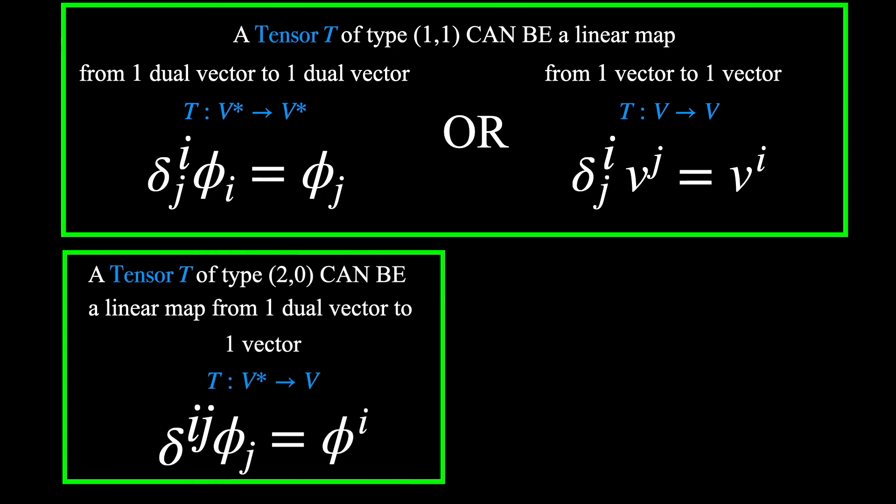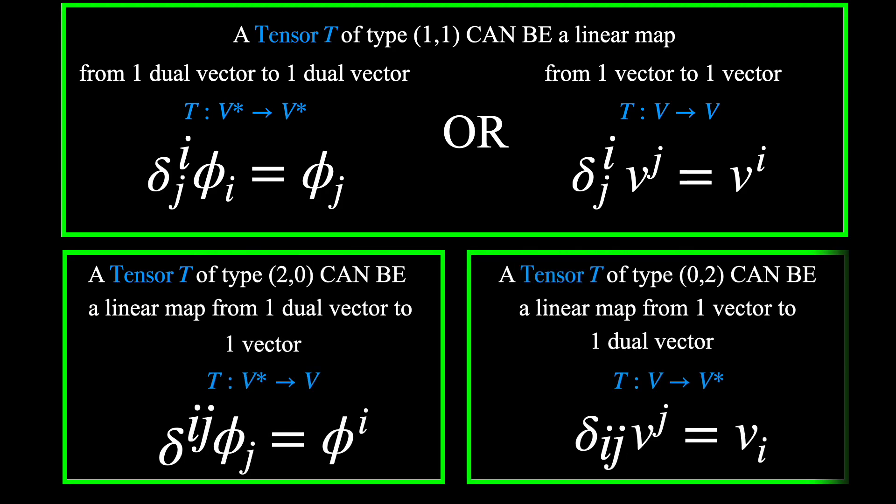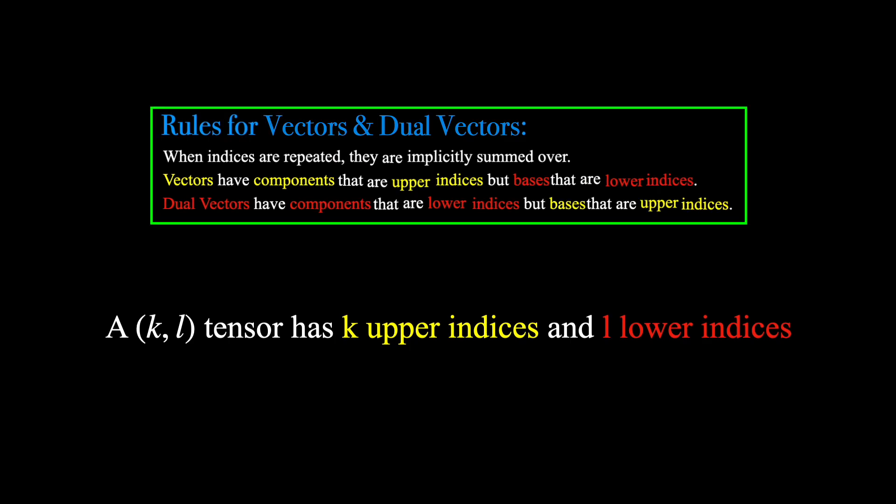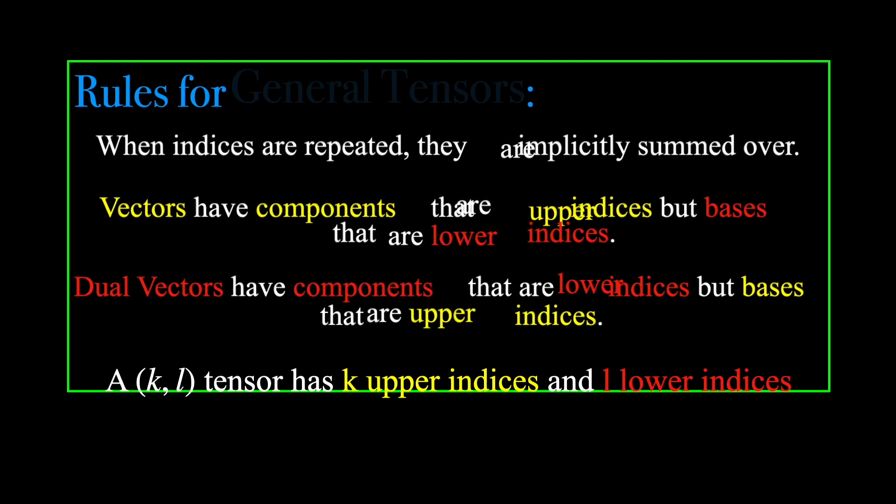So one can view all of these tensors either as multilinear maps or as specific linear maps that are all consistently defined. And if you study enough physics, you will see the Kronecker delta show up in all of these forms. Where at times it can be frustrating and confusing trying to figure out which type of tensor is being referred to. But if you keep these four Einstein notation rules in mind, things should become crystal clear.